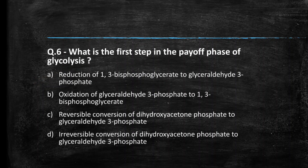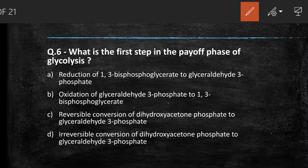Next question: which is the first step in the payoff phase of glycolysis? (A) Reduction of 1,3-bisphosphoglycerate to glyceraldehyde-3-phosphate, (B) Oxidation of glyceraldehyde-3-phosphate to 1,3-bisphosphoglycerate, (C) Reversible conversion of DHAP to glyceraldehyde-3-phosphate, (D) Irreversible conversion of DHAP to glyceraldehyde-3-phosphate. The right answer is option B — the first reaction in the payoff phase is the oxidation of glyceraldehyde-3-phosphate to 1,3-bisphosphoglycerate.